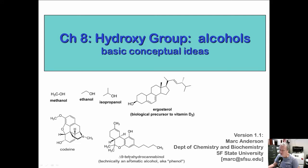Delta-9-THC, or tetrahydrocannabinol, has a pretty cool structure with a couple of rings including a benzene, a couple of six-membered rings, and a six-carbon chain attached to it. This molecule is an example of a phenol — an aromatic alcohol. If you have a benzene with a hydroxy group, it's not only an alcohol but an aromatic alcohol, called a phenol.